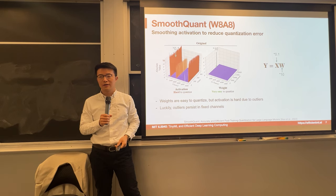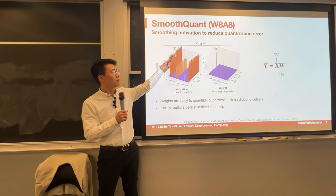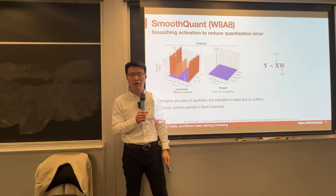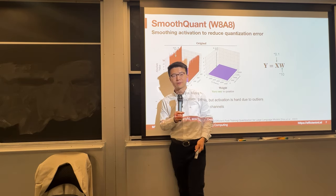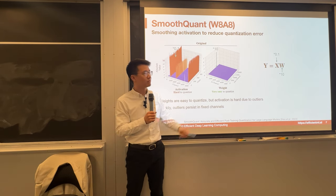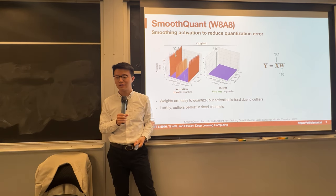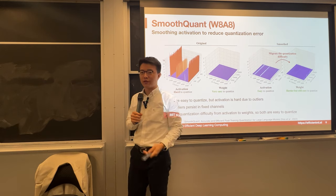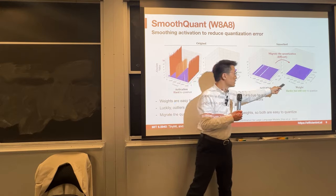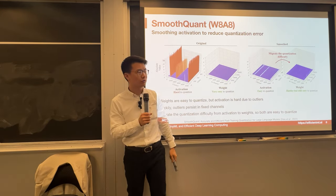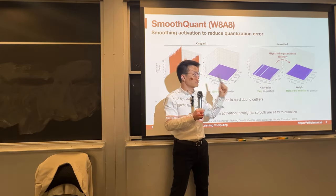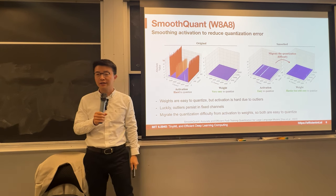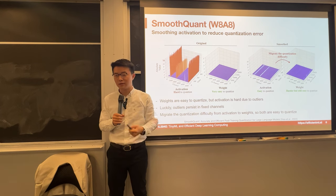How do we deal with it? The key insight: since matrix multiplication is linear, we can multiply the activation channel by 0.1 and enlarge the weight by 10 times — the final result is still the same. So we can smooth those activations to make them more flat, removing those big outlier values. This effectively migrates the quantization difficulty from the activation to the weight, making both easier to quantize. The weight becomes slightly harder to quantize, but still within control compared to the original activation.